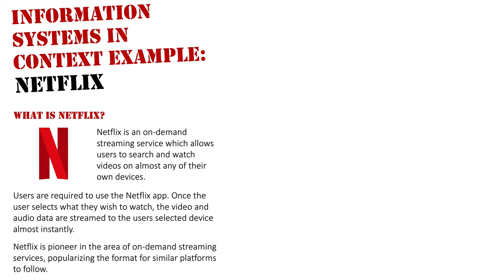Netflix is a pioneer in the area of on-demand streaming services and it popularized the format for similar platforms to follow — Amazon Prime, Disney+, Stan — these have all been apps that followed Netflix and really helped the on-demand service to grow. It's great to have multiple on-demand services because it gives you a greater selection and library of things to watch. So let's have a look at Netflix and use the information system context diagram to provide an example of how it would operate.